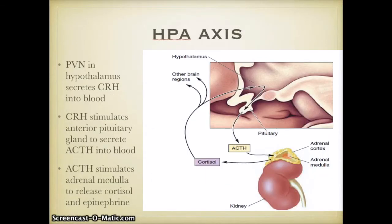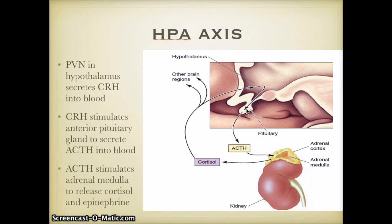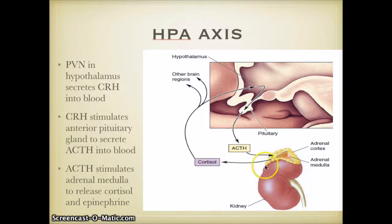In the HPA axis — HPA standing for hypothalamic-pituitary-adrenal axis — the periventricular nucleus of the hypothalamus secretes a molecule called corticotropin-releasing hormone. This hormone enters the blood and travels a short distance to your anterior pituitary gland, causing it to release adrenal corticotropin into the blood. This adrenal corticotropin floats in your blood to the adrenal glands above your kidneys, signaling the adrenal medulla to secrete cortisol and adrenaline. Cortisol then induces the physiological changes associated with the stress response and can also act as negative feedback to your hypothalamus.